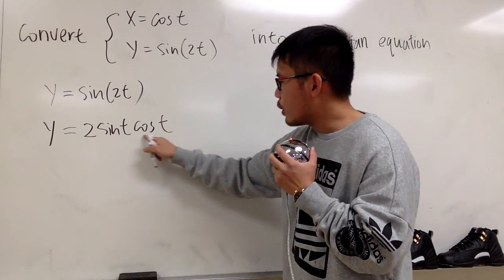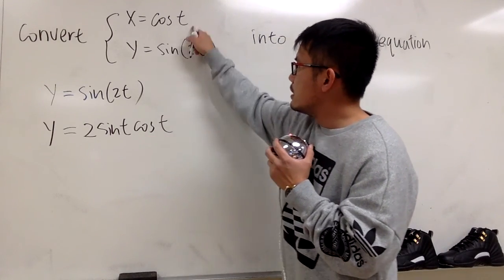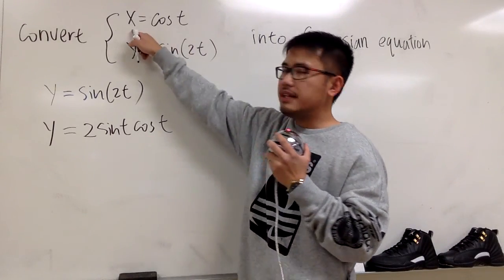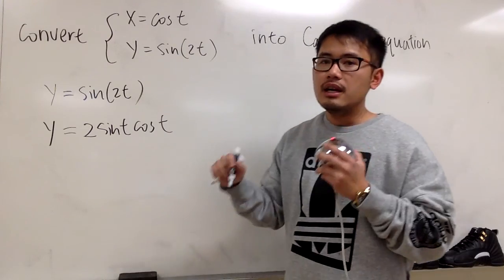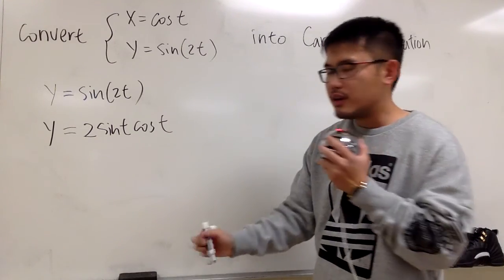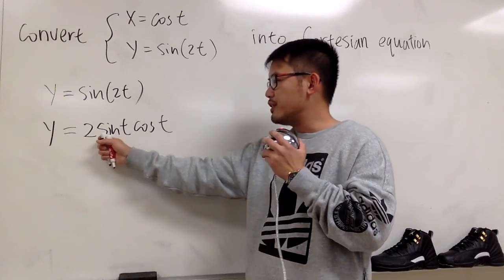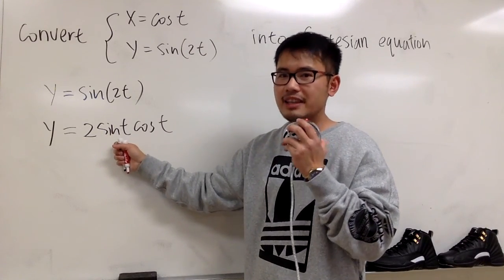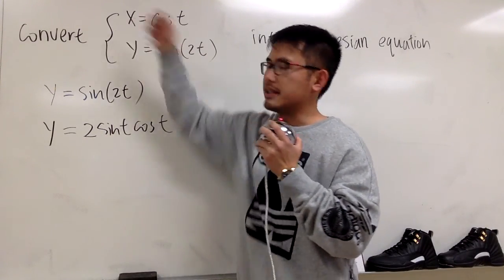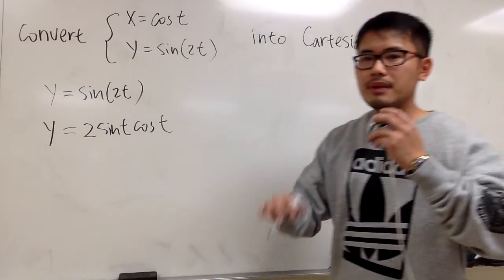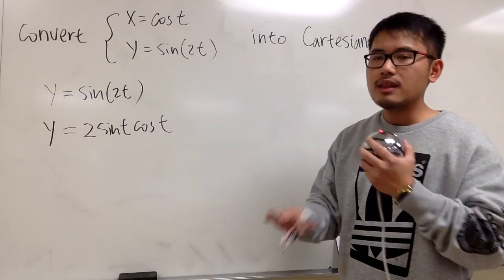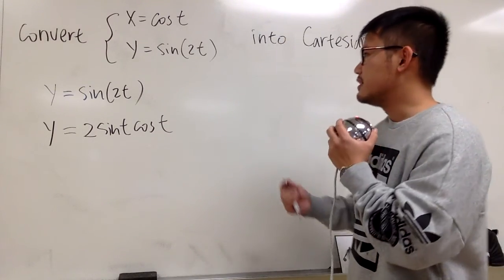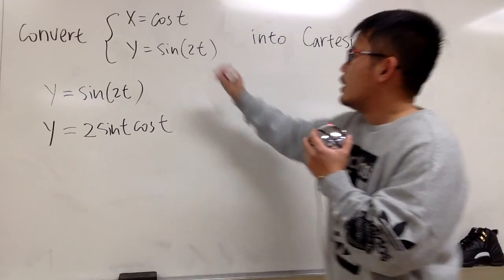You can see that cosine t is exactly x. However, we still have to figure out what sine t is in terms of x. If we can do that, then we are done.